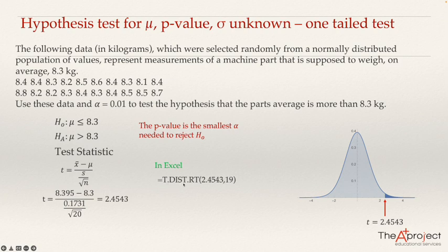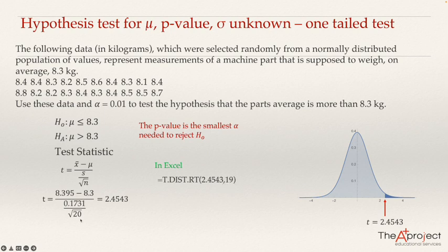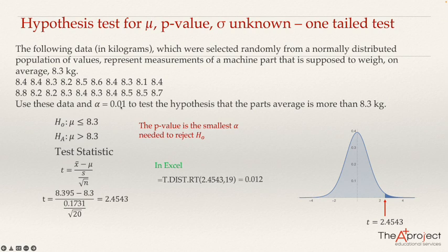Use the Excel function T.DIST.RT: type an equals sign, then T.DIST.RT, open bracket, type the t-value, then the degrees of freedom — n minus 1, which is 19 — close bracket, and press Enter. That gives the p-value. The result is a p-value of 0.012. Since this p-value is greater than the level of significance of 0.01, we fail to reject the null hypothesis.